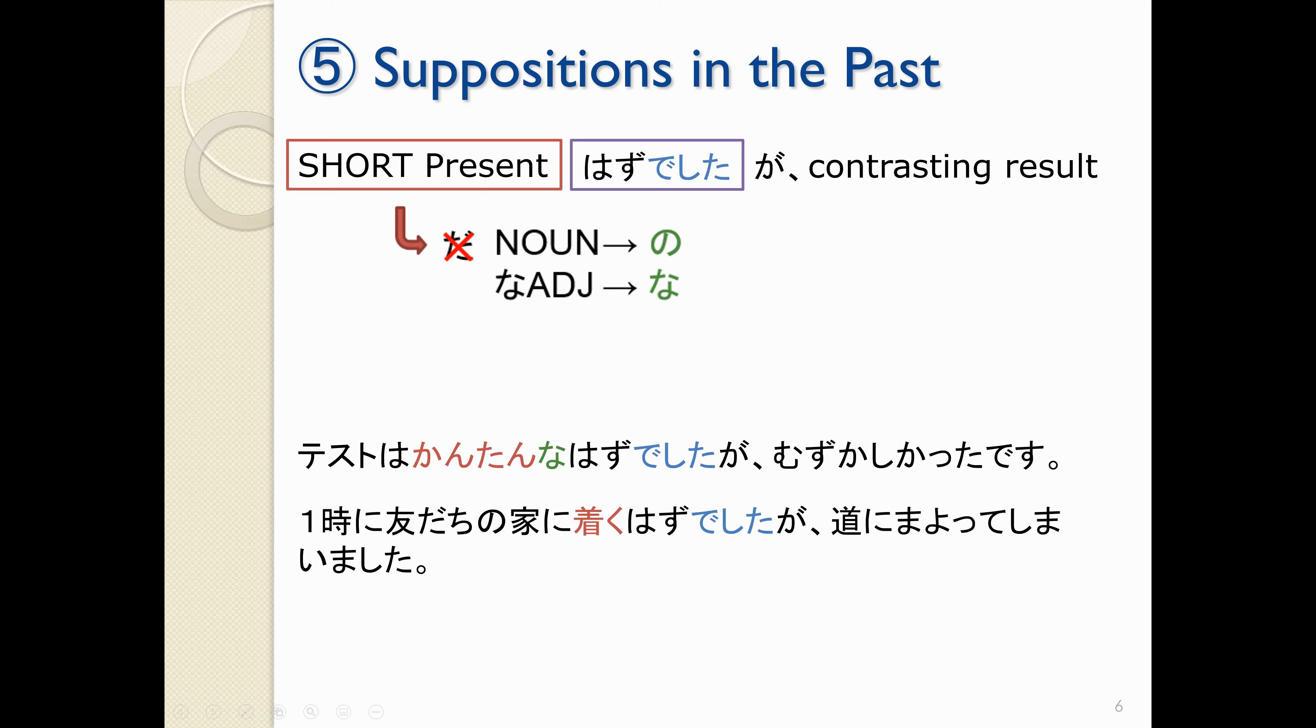We made an assumption in the past, but instead we got, like, a contrasting result. So, テスト は簡単 なはずでしたが、むずかしかったです。 The test was supposed to be easy, but it was hard. いちじに ともだちの家に つくはずでしたが、みちに まよってしまいました。 I was supposed to get to my friend's house at 1 o'clock, but I got lost. So, using the はずでした with a contrasting part at the end, we can show a situation where what we assumed did not come true. はずでした。